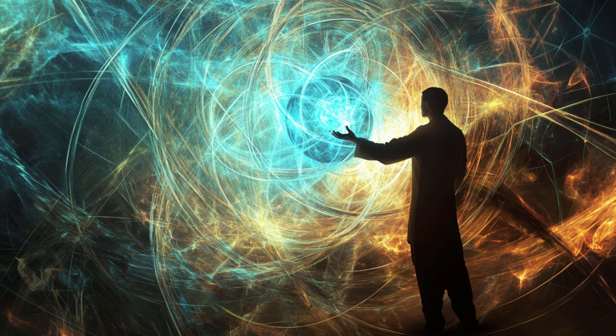When you sit on a chair, the atoms in your body never come into direct contact with the atoms in the chair. Instead, the repulsion between electron clouds prevents your atoms from sinking into the chair, supporting your weight and making the chair feel solid.